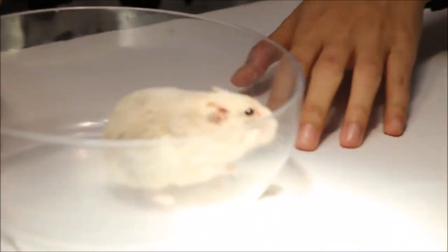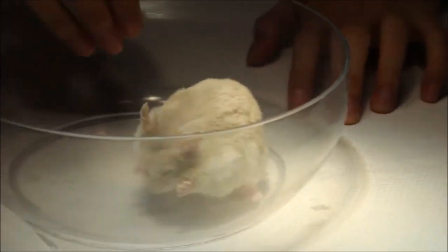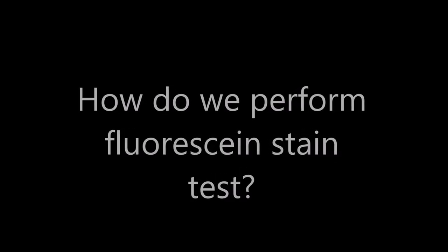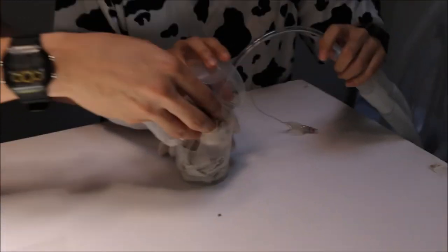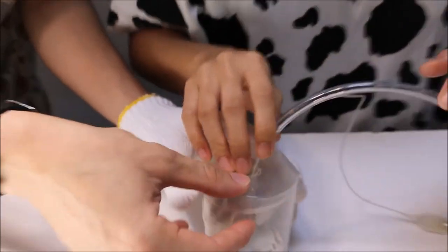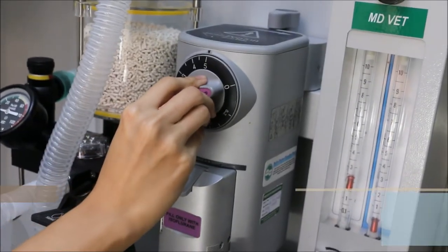So the vet has diagnosed a corneal ulcer in Twinkle. Before we perform the fluorescent test, we anesthetize the animal with isoflurane gas for around 1 minute.